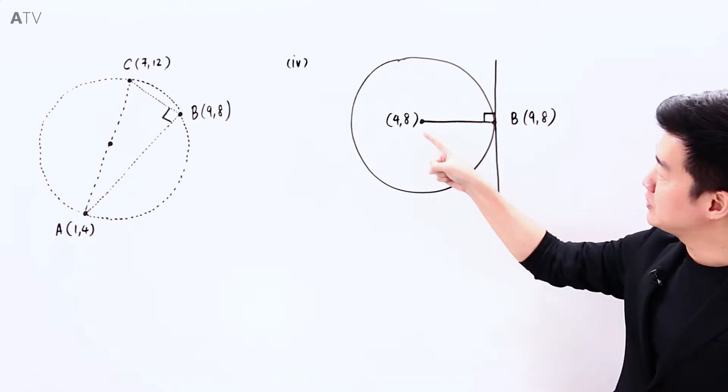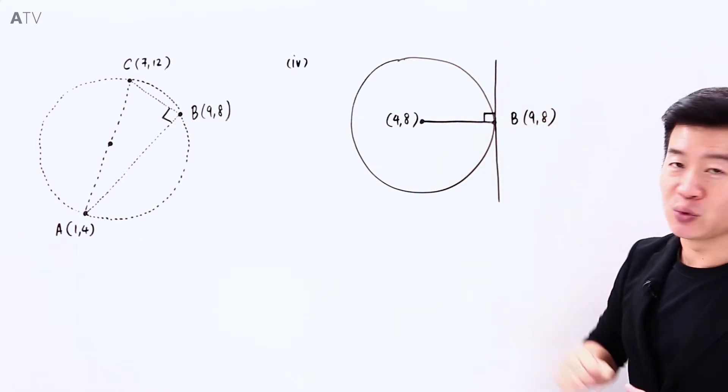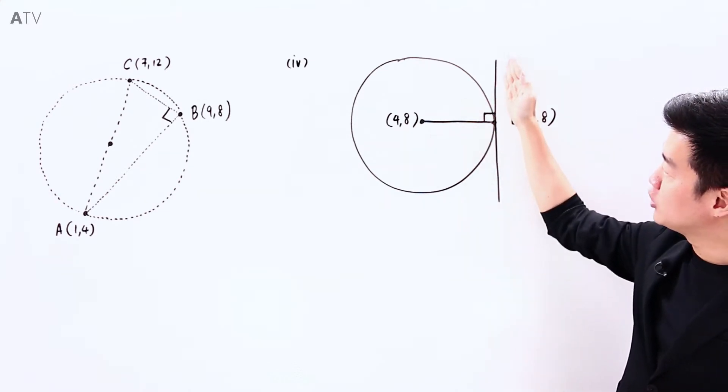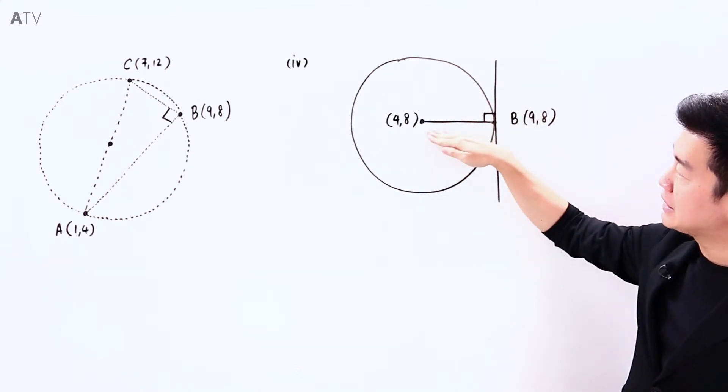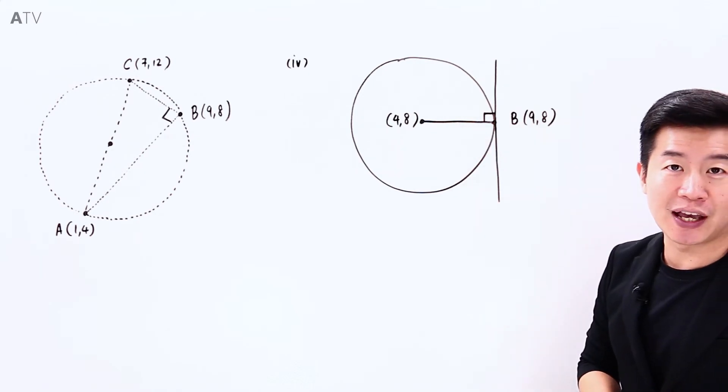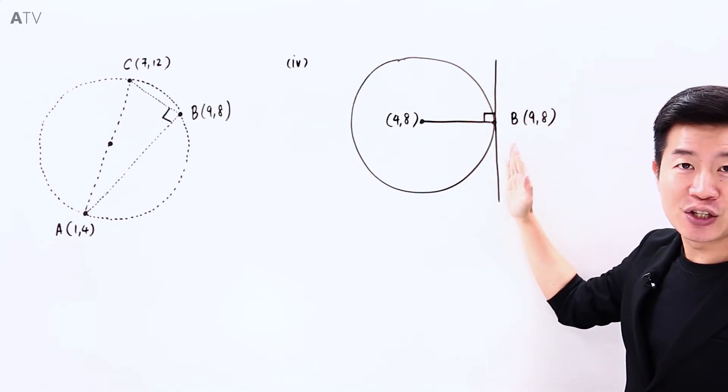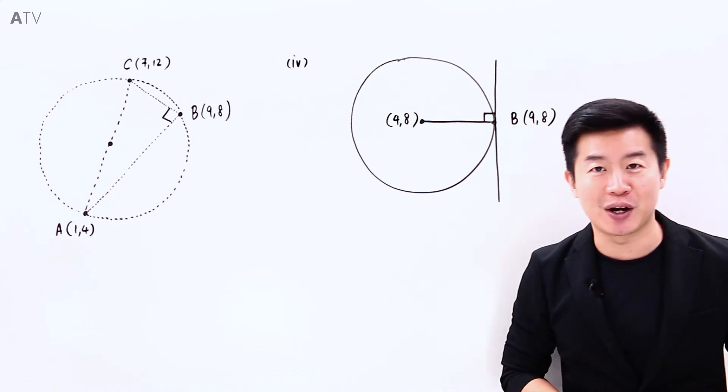And at the same time, the radius will be perpendicular to the tangent, which means that these two lines are going to be perpendicular to each other and if this line is going to be parallel to the x-axis, this, which is the tangent at B, must be parallel to the Y-axis.